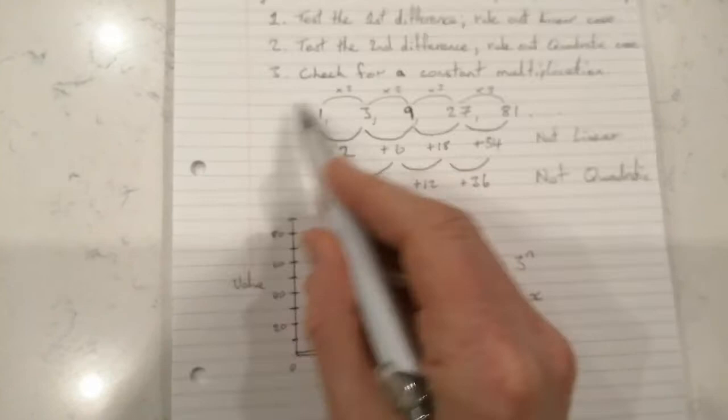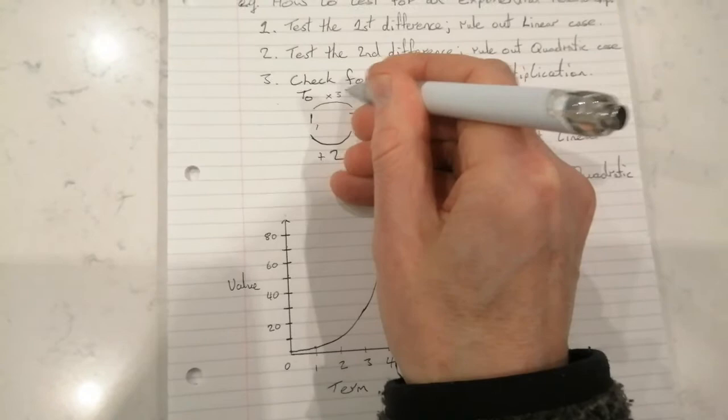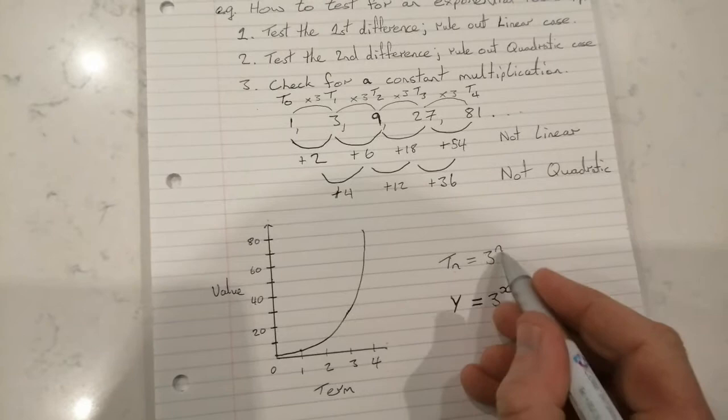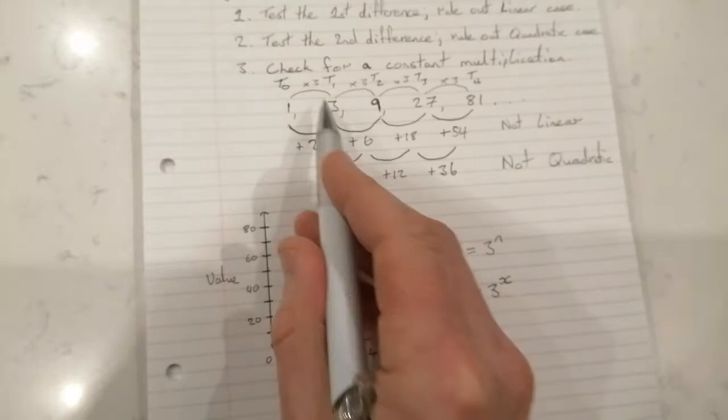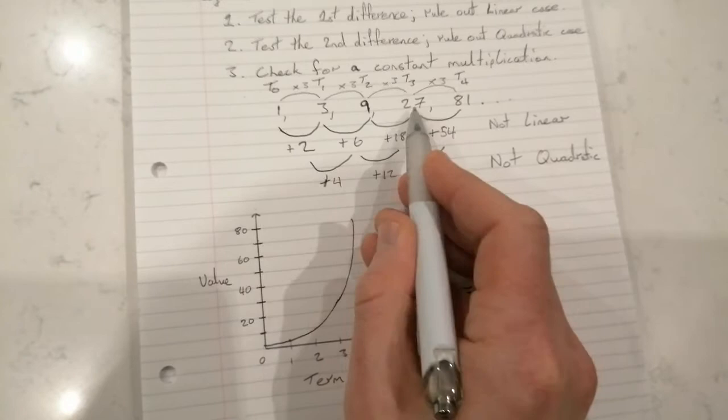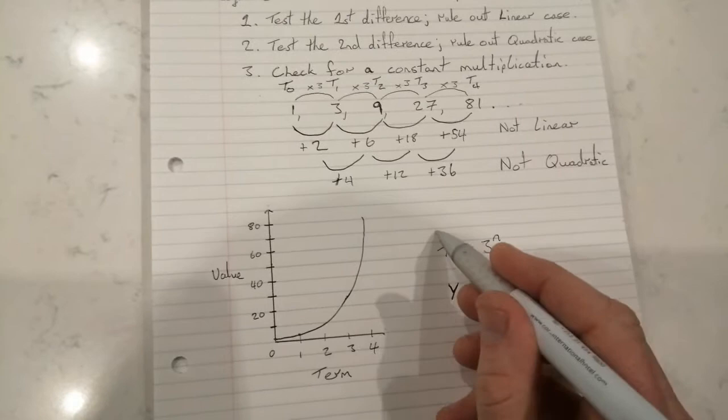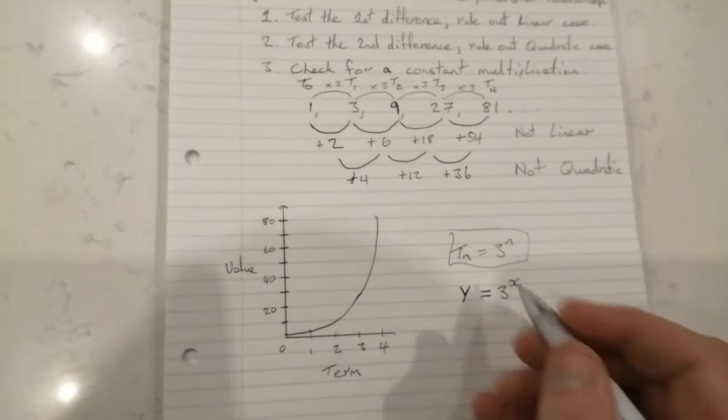Now, for this to be true though, in this instance you would have to see this first term here being term zero, and this one being term one, and this one being term two, term three, and term four. Because as you can see, if this is term zero and we sub in zero here, three to the power of zero is one—anything to the power of zero is one. Subbing in one, three to the power of one is three, three to the power of two is nine, three to the power of three is 27, to the power of four is 81. So you'd have to really, if you were laying this out in a table and they had given it to you, this would have to be term zero.